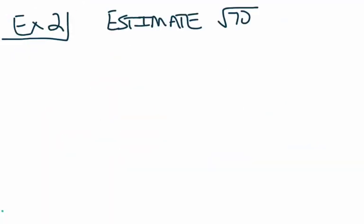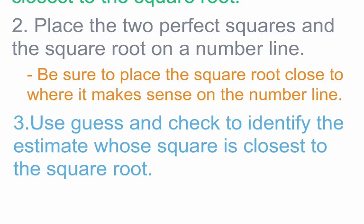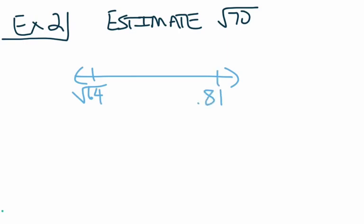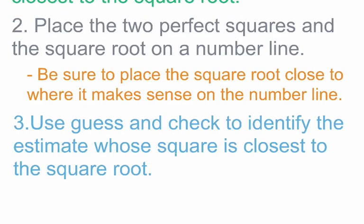Let's take a look at another one. We're going to work on estimating the square root of 70. The expectation is to estimate to one decimal place. Our first step is to identify the two perfect squares closest to the square root. We need that list of perfect squares memorized to be successful. The two perfect squares closest to 70 are the square root of 64 and the square root of 81. I've placed those two perfect squares on the number line, and now I need to also place the square root of 70.